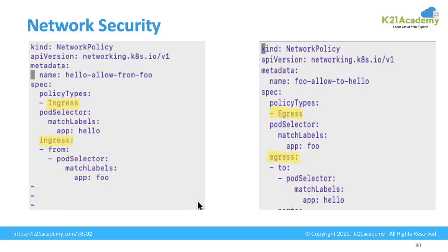This is how you specify your conditions in the network policy section — either as an incoming condition or an outgoing condition. Depending on that, you specify the policy type: ingress policy for incoming traffic and egress policy for outgoing traffic. You can also specify a range of IP addresses or a subnet you want to allow. Since this topic is more developer-oriented, we are covering a brief overview of network security in the admin course. We will see the actual creation of ingress and egress policies in the hands-on exercise video.